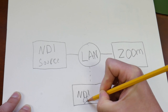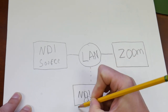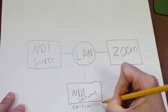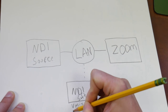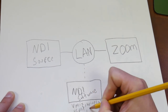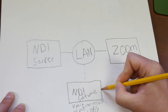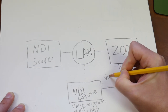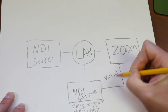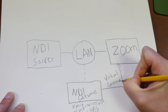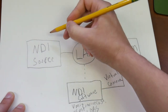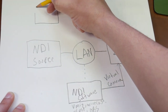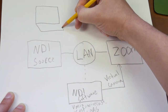We've got our NDI source — it could be a camera or a capture card — and we connect it directly to Zoom, but there's something in the middle: an NDI software, whether you're using vMix, Wirecast, XSplit, or Ecamm Live, or an NDI tool. We have the NDI virtual camera input that we'll show today as well, and that allows you to create a virtual camera which feeds directly into Zoom. That may be all you need, and that's perfectly fine.